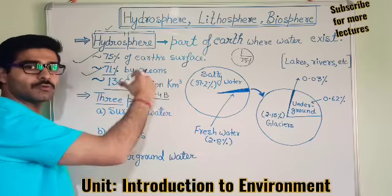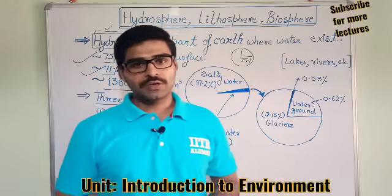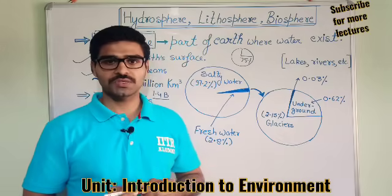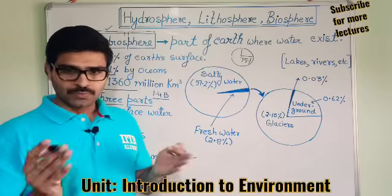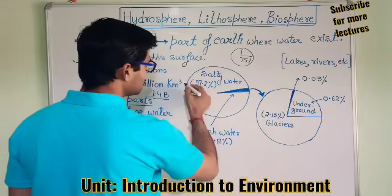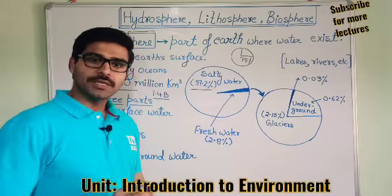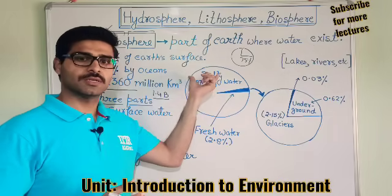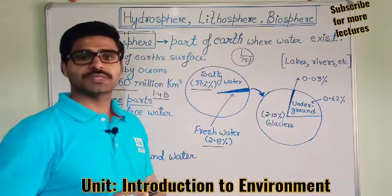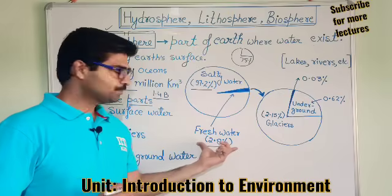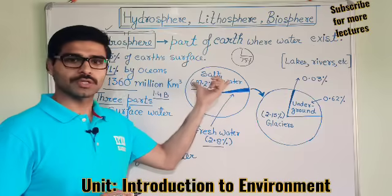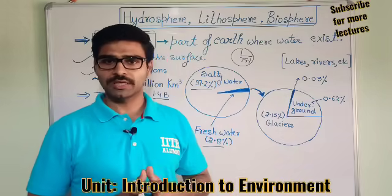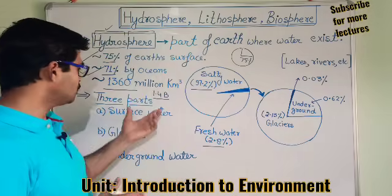This total water present on Earth can be classified into two parts based on taste. Two types of water exist on Earth: first is fresh water and second is salty water. Salty water is the major part, comprising about 97.2% — meaning more than 97% of Earth's water is salty. Fresh water is only about 2.8%, so the quantity of fresh water is very low compared to salty water.